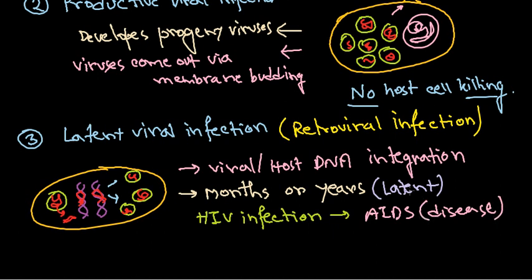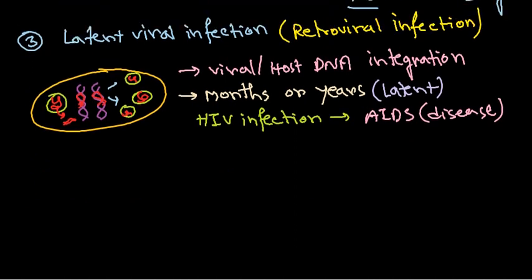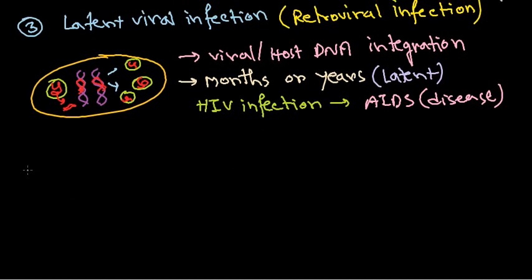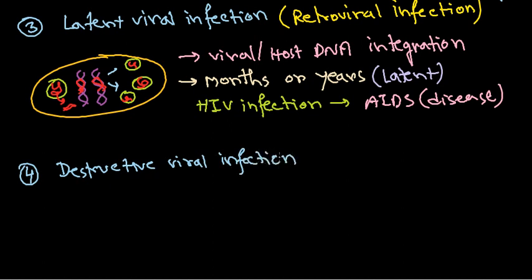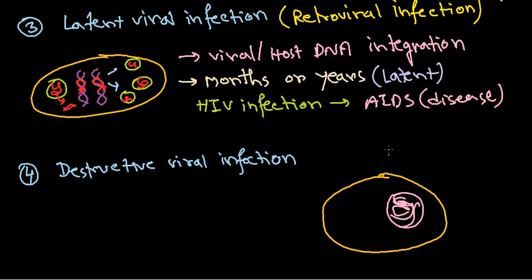When the virus starts to release those progeny viruses by budding or killing the cell, it converts into disease. For example, a simple HIV infection matures and when the virus starts to release outside, we call it AIDS — it finally turns into disease. The last type of fate is destructive viral infection, also called lethal viral infection.